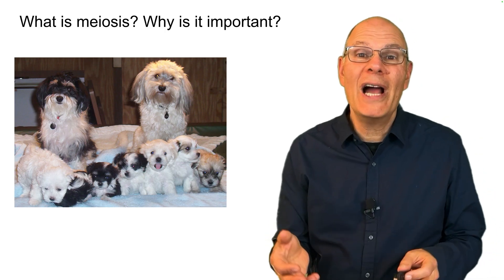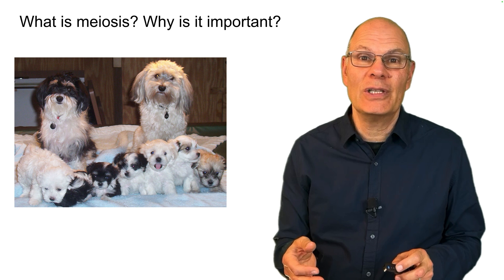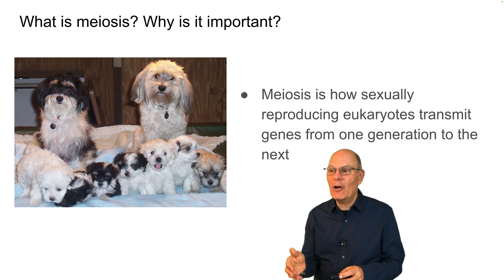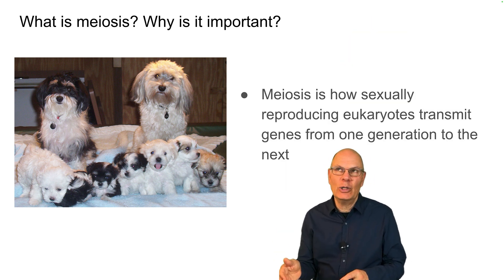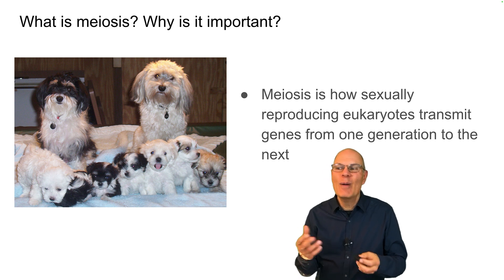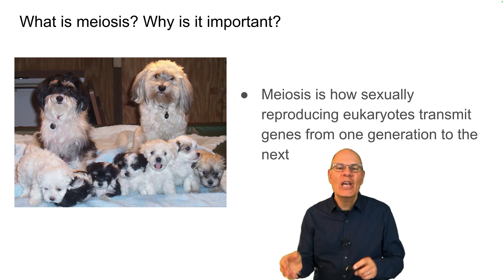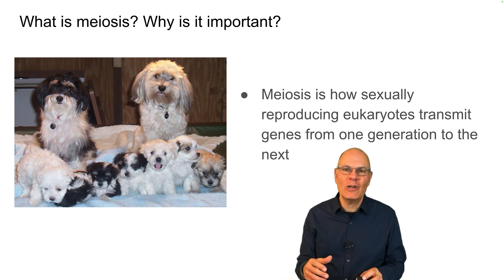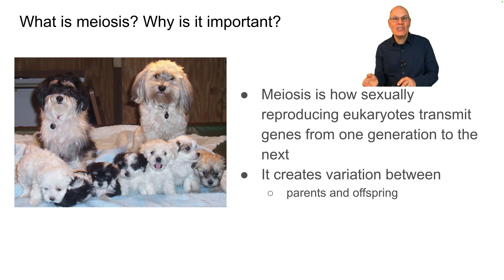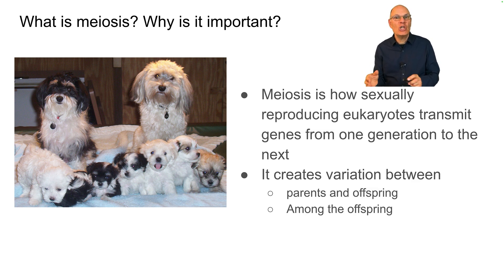What is meiosis? Why is it important? Meiosis is how sexually reproducing eukaryotes — that includes animals, plants, fungi, and protists — transmit genes from one generation to the next. It creates variation between parents and their offspring and creates variation among the offspring.